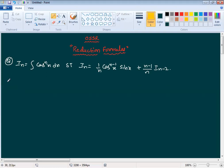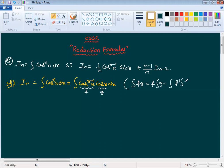Let me write the complete solution. In equals integral cos power n x dx. I'll write this as integral cos power n minus 1 x into cos x dx. We'll use integration by parts formula: integral f g equals f integral g minus integral f dash integral g.